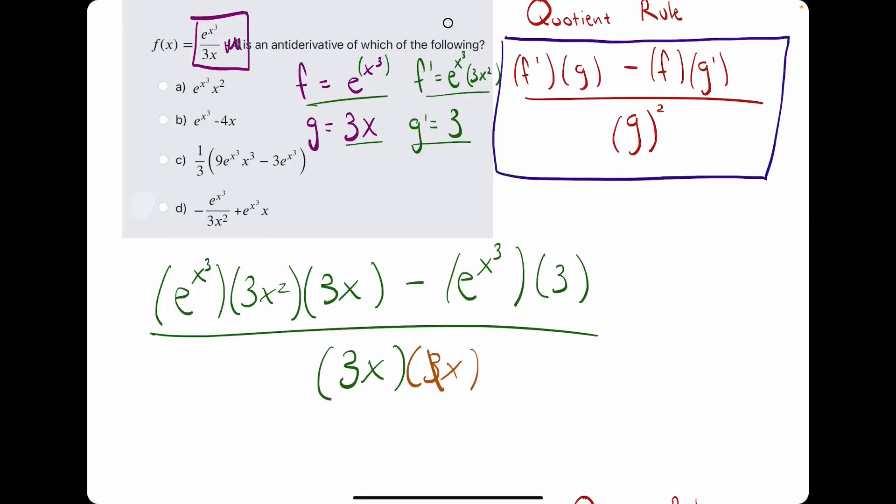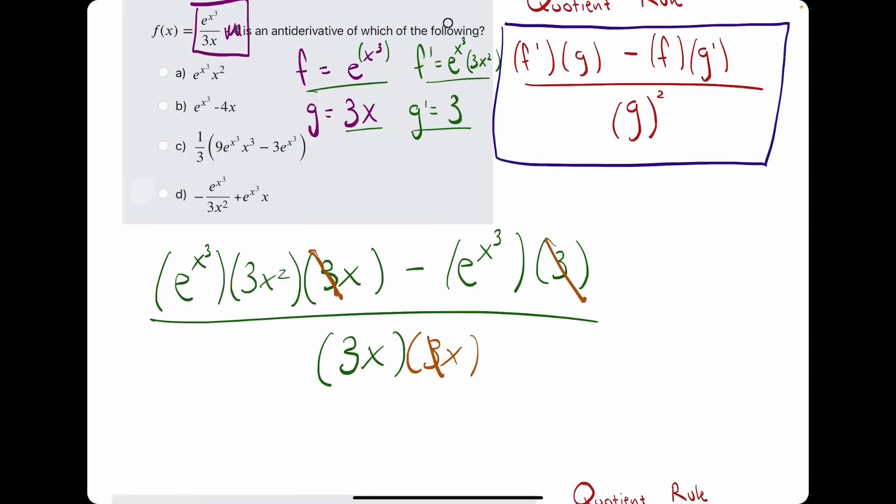And so, what we can do with this is, cancel out a 3 from the bottom, with 1 from each of the terms on top. Canceling out a 3 on the bottom cancels 1 from here, as well as 1 here. So then, what are we left with? Can we cancel anything else out?